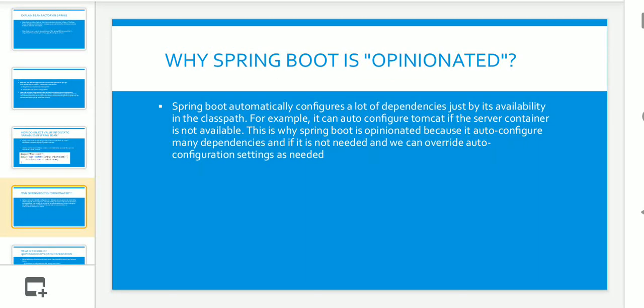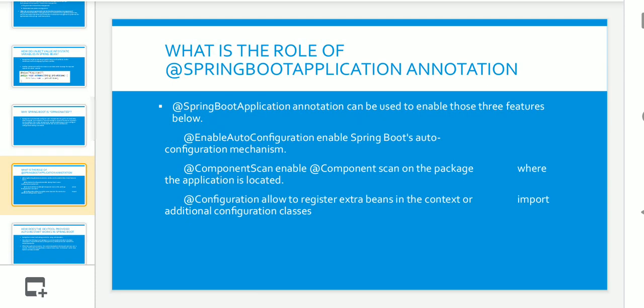The next question was: why is Spring Boot opinionated? Spring Boot automatically configures many dependencies based on their availability in the class path. For example, it can auto-configure Tomcat if a servlet container is not available. This is why Spring Boot is considered opinionated — it auto-configures many dependencies by default, though you can override those auto-configuration settings as needed.